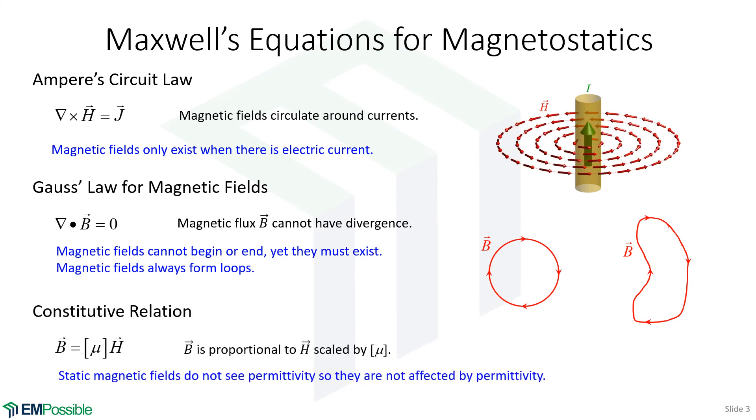And the last is the constitutive relation. This is where the permeability comes into the mix. And it's just saying the magnetic flux is proportional to the magnetic field intensity through this factor called the permeability. And that permeability can be a tensor, in which case the magnetic flux can be in a different direction than the magnetic field intensity.